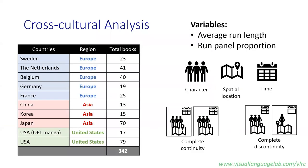We also conducted a cross-cultural analysis. We included nine different countries in our corpus, grouped into three regions: Europe, Asia, and the United States. Within the United States, we also have OEL manga, which stands for originally English language manga — books written to be like manga but by English speakers. For this presentation, we unite them as books from the United States, but more findings related to OEL manga can be found in the paper.